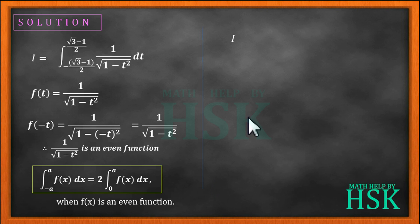So we can write I as equal to 2 times 1 by square root of 1 minus t square dt from the limit 0 to root 3 minus 1 upon 2.